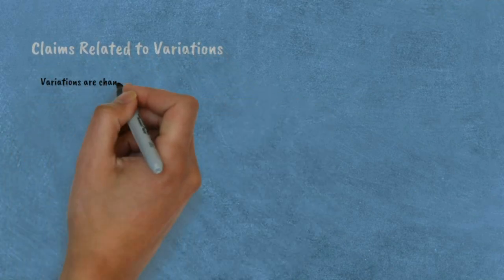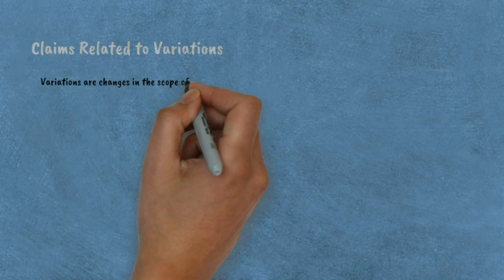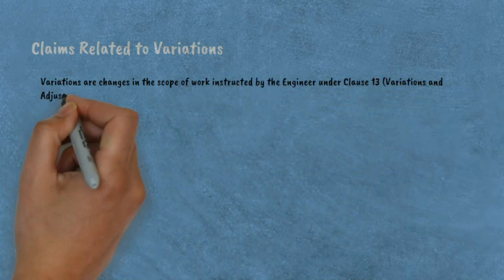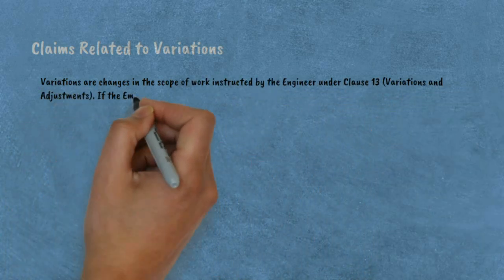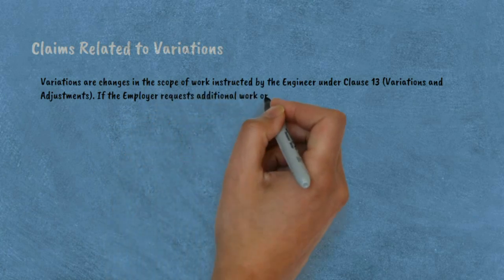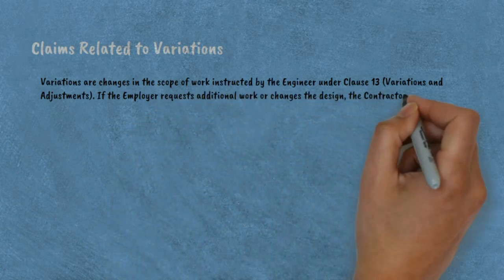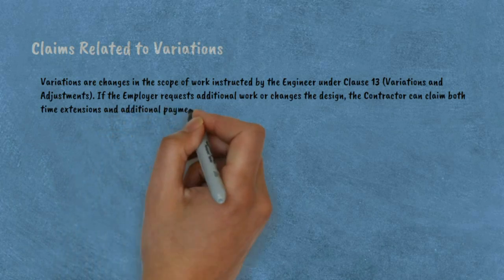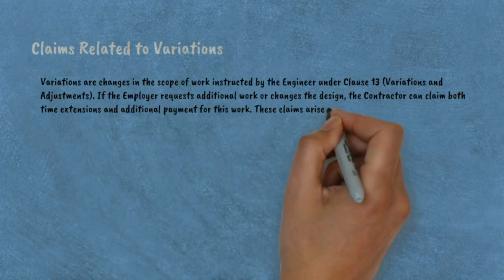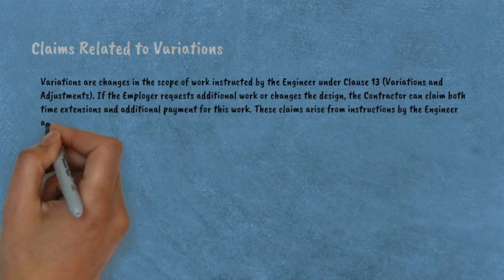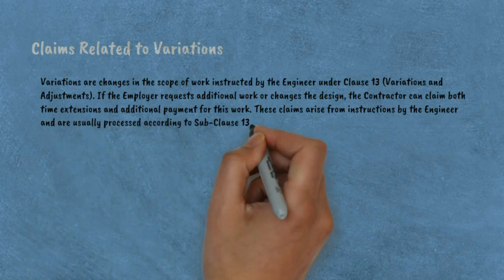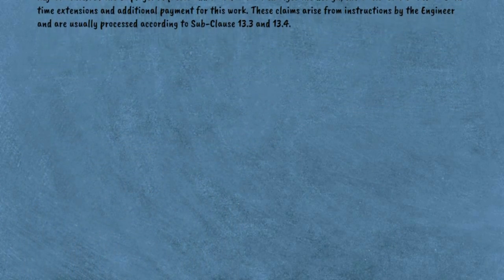Third, claims related to variations. Variations are changes in the scope of work instructed by the engineer under Clause 13, Variations and Adjustments. If the employer requests additional work or changes the design, the contractor can claim both time extensions and additional payment for this work. These claims are usually processed according to Sub-clauses 13.3 and 13.4.